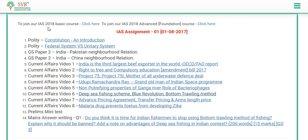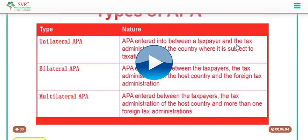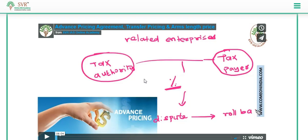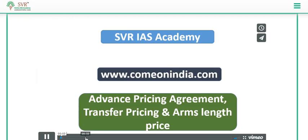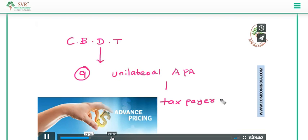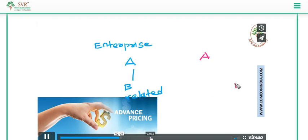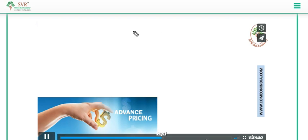The 7th video lecture published on current affairs is about advanced pricing agreements, transfer pricing, and arm's length price. Recently the Central Board of Direct Taxes signed some unilateral advanced pricing agreements. We discussed what an advanced pricing agreement is, its various types, what transfer pricing is, what arm's length pricing is, and the importance of advanced pricing agreements — especially how it gives tax certainty to taxpayers and allows rollback provisions. This is an important topic for the 2018 prelims examination.